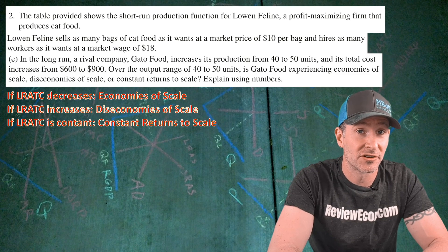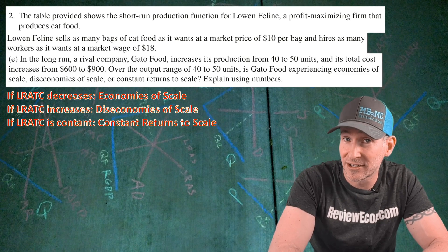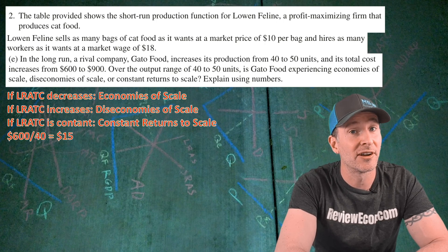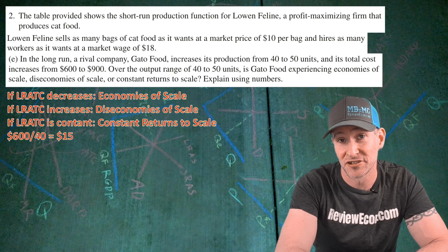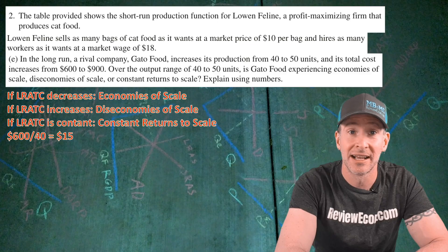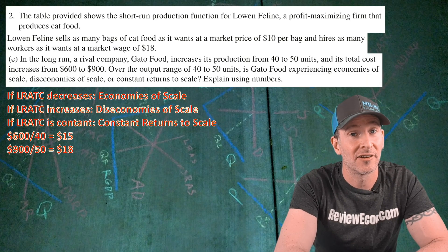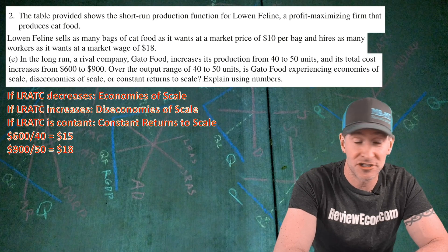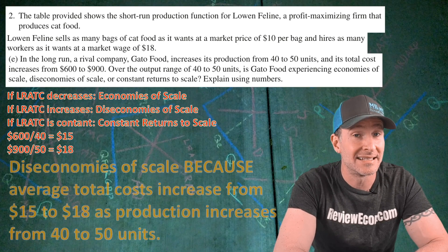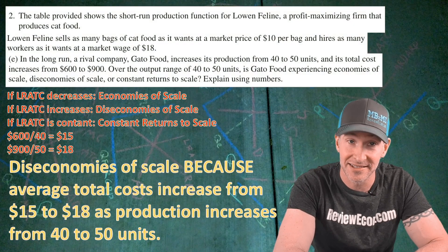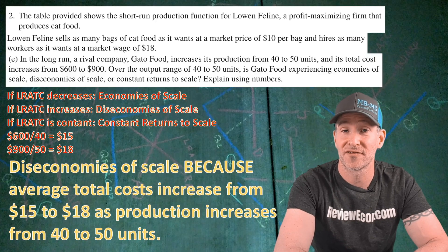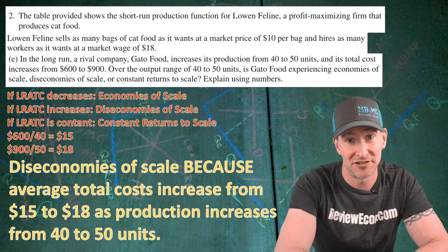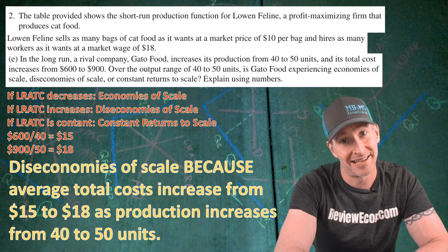To find what the long-run average total cost is doing, we calculate the average total cost at both quantities. Plugging in the numbers, we see a $15 long-run average total cost at 40 units of output, and an $18 long-run average total cost at 50 units of output. Since long-run average total cost increased as production increased, Gato Foods is experiencing diseconomies of scale, because average total cost increases from $15 to $18 as production increases from 40 to 50 units. That answer gets your last point.